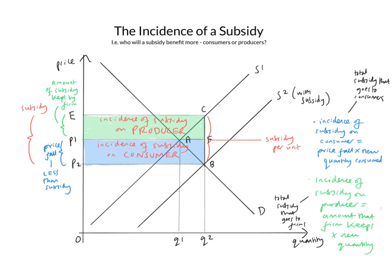What you'll notice here is that the price fall P1 minus P2 is actually smaller than the amount of the subsidy. So who gets the rest of the subsidy? Well, it's kept by the firm — E to P1. To calculate the amount of the subsidy that goes to the consumer, we take the price fall P1 minus P2, multiply it by the new quantity OQ2 — not the old quantity, the new one. Drawing that together, we get the rectangle P1, P2, B, F. Colour that in, and that gives us the incidence of the subsidy on the consumer.